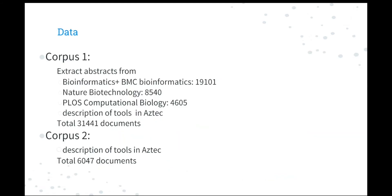Let's talk about the data. In our system, we utilize two corpuses. For the first one, we will use it to build the thesaurus. We expect it could be large enough to cover all the knowledge of the bioinformatics field, especially the reasonable phrases and the semantic relation between terms. So we extract the abstracts from Bioinformatics, BMC Bioinformatics, Nature Biotechnology, and PLOS Computational Biology, because they are the journals that publish more tools than other journals. And also, we combine them with the description of tools in Aztec. Totally, we got more than 30,000 documents. Our corpus 2 is the description of tools in Aztec, which we will do the research on.